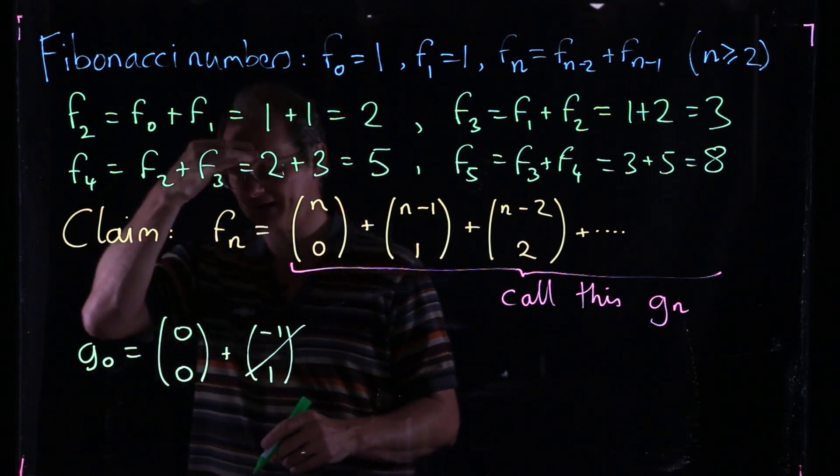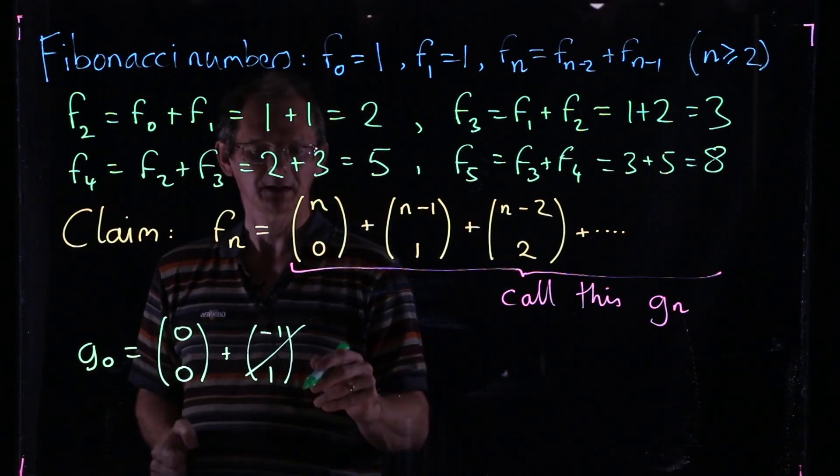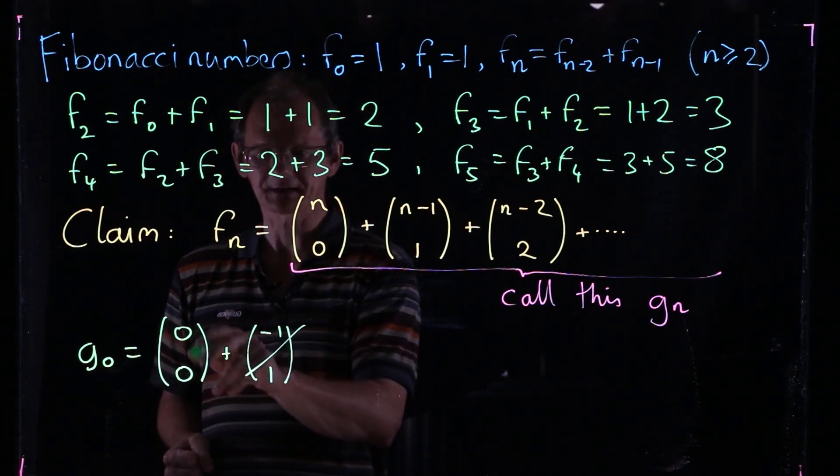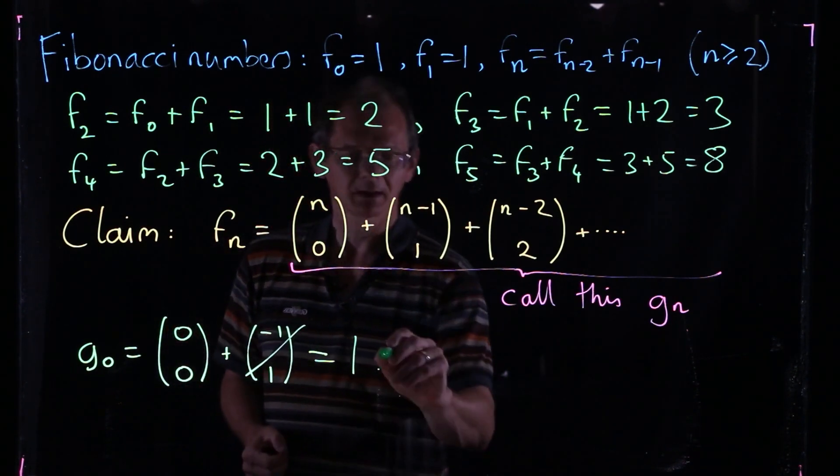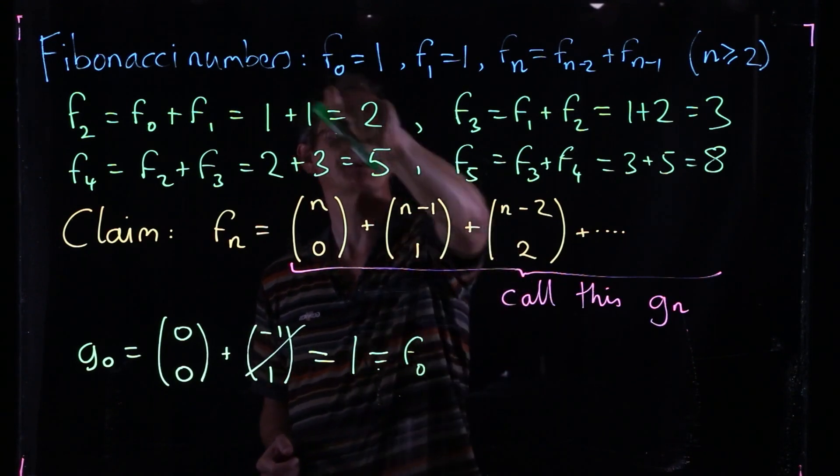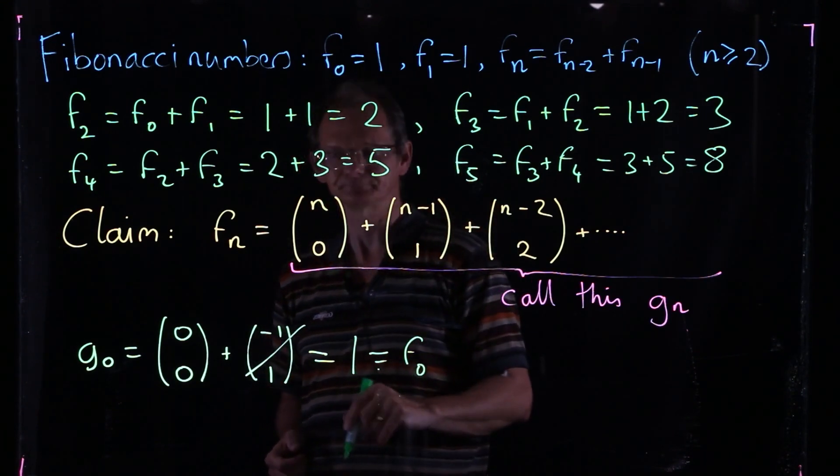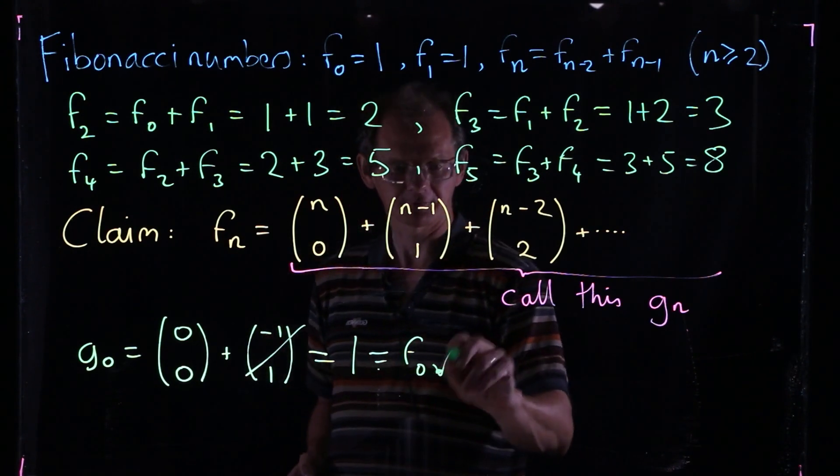Or if you like, it's 0 factorial over 0 factorial squared, but 0 factorial is just equal to 1 as well. So that's just equal to 1. And that, of course, is the same as F0. F0 is defined to be equal to 1. So that's the first thing, so that's good.